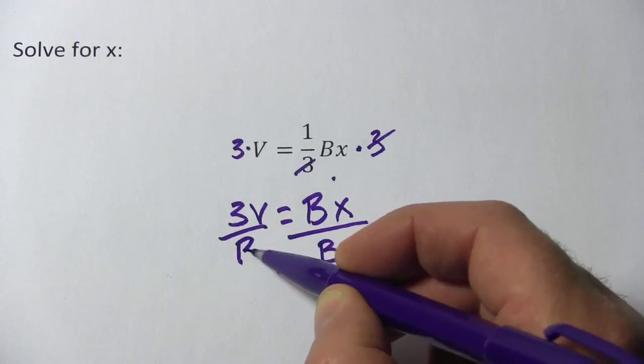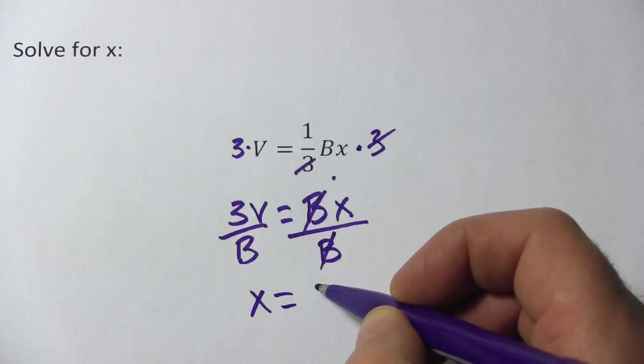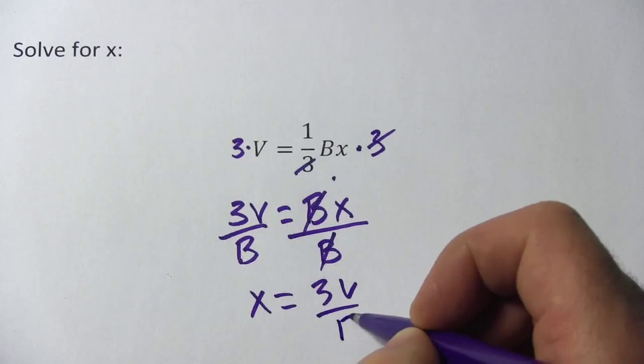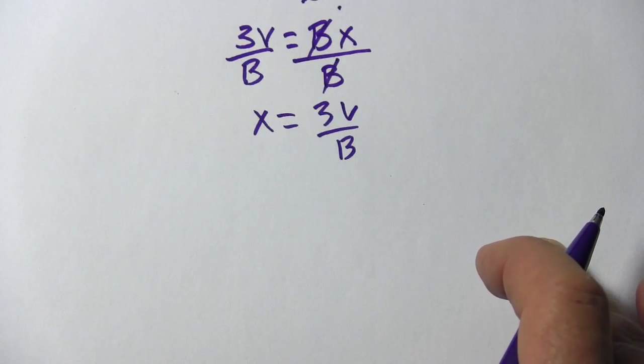So we'll do that to both sides of the equation. The B's cancel over here, and you get x equals 3V over B. And that's really all there is to that.